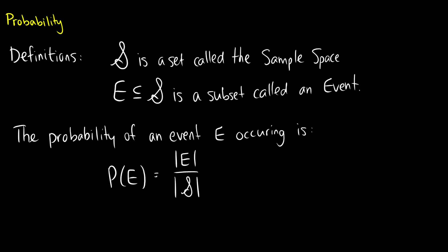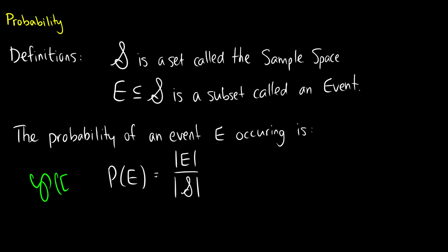Here are some definitions, just so we're consistent and you know what notation I use — it might be different from what you've seen. Capital S is going to be the sample space, written as a cursive S. Any capital letter is going to be a subset of our sample space, and that's called an event. The probability of an event E is P(E). Some texts use P(R,E), but I drop the R. The probability is the number of elements in E divided by the number of elements in the sample space.